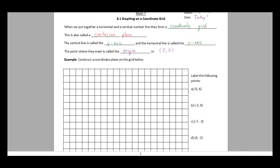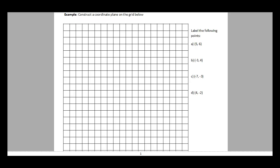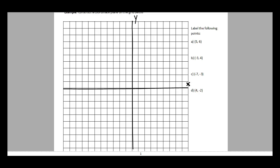We're going to construct a coordinate grid and label a few points. To draw the grid, we use a ruler and draw a straight line down the middle — this vertical line is the y-axis, labeled with a little 'y'. Then running through the middle horizontally is the x-axis, labeled with a little 'x'.